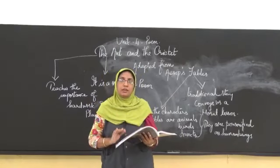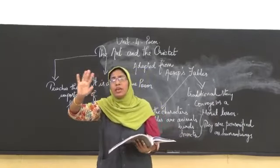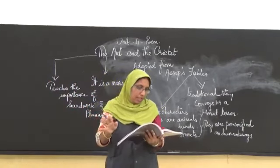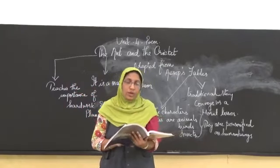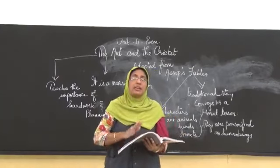Thus ending, he hastily lifted the wicket. So the ant, what he did quickly, he lifted the wicket. Wicket is nothing but a door. And out of door turned the poor little cricket.